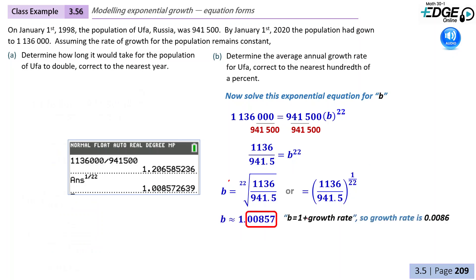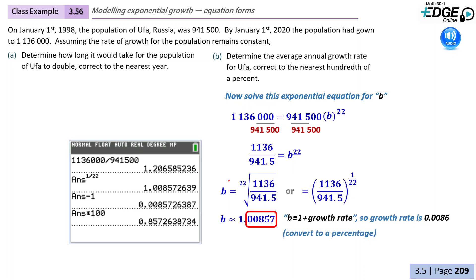Now remember, our B-value is really 1 plus the growth rate. So this section is our growth rate. But it's not written as a percentage yet. So we still need to multiply by 100. So the average growth rate would be 0.86%.